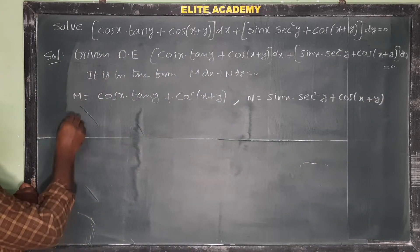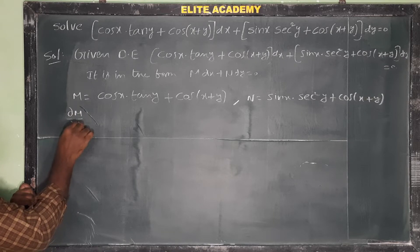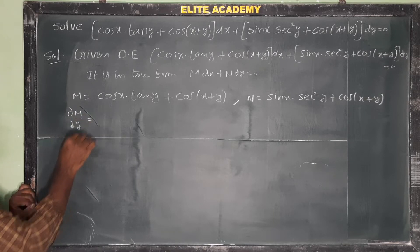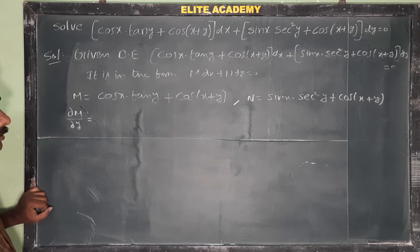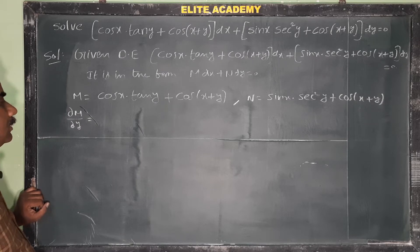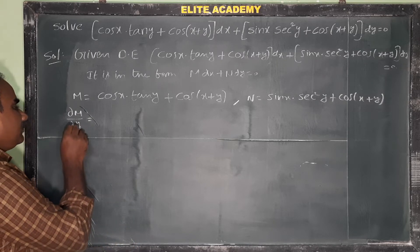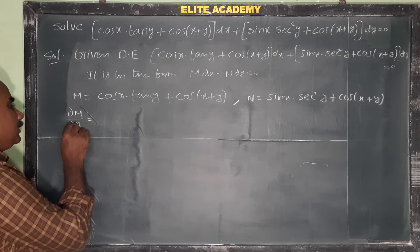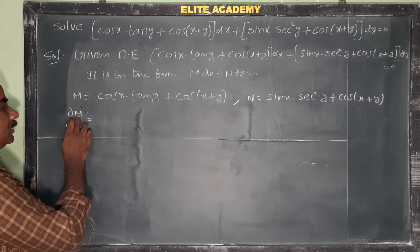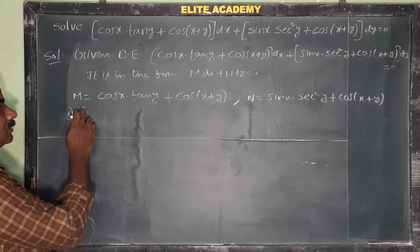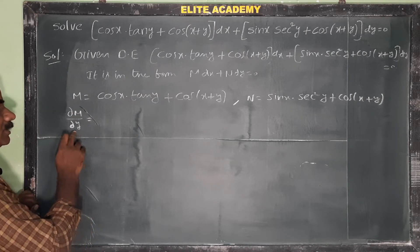Now we find ∂M/∂y and ∂N/∂x. To check for an exact equation, we differentiate M partially with respect to y and N partially with respect to x.